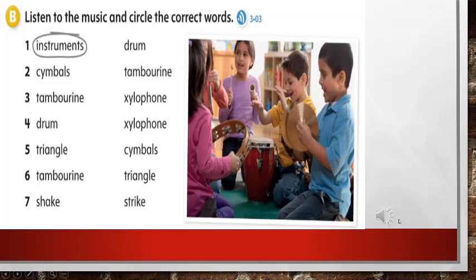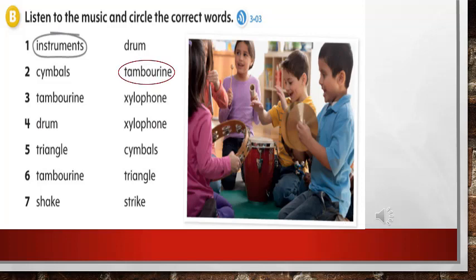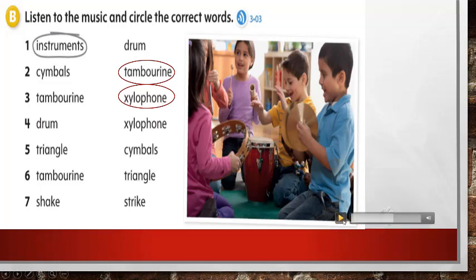Alright, let's check this exercise. Listen to the music and circle the correct words — page 148, exercise B. Number one: instruments. Number two: tambourine — excellent! Number three: xylophone — super! Number four: drum — excellent!